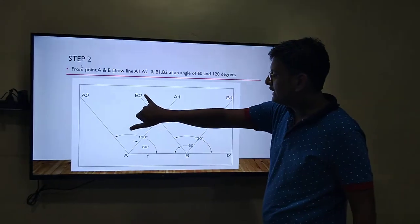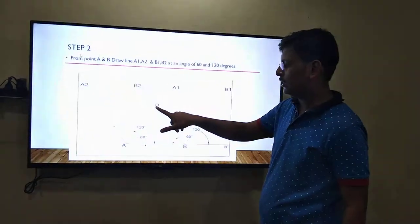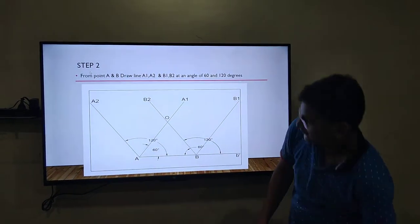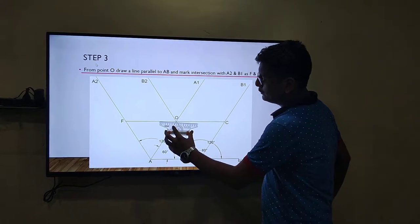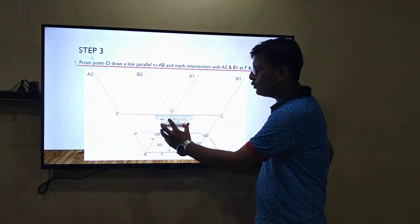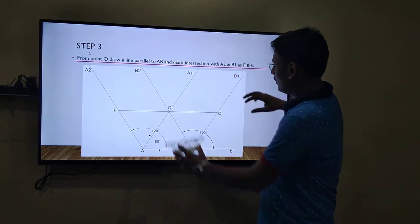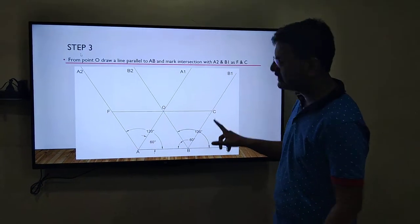After the intersection of line B2 and A1, mark it as O. Roll your roller from AB up to point O. So, the intersection of B2 and A1, join the line and give the name as F and C.